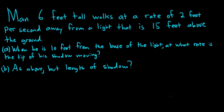A man 6 feet tall walks at a rate of 2 feet per second away from a light that is 15 feet above the ground. When he is 10 feet from the base of the light, at what rate is the tip of his shadow moving? Part B asks: as above, when he's 10 feet away, at what rate is the length of his shadow changing?